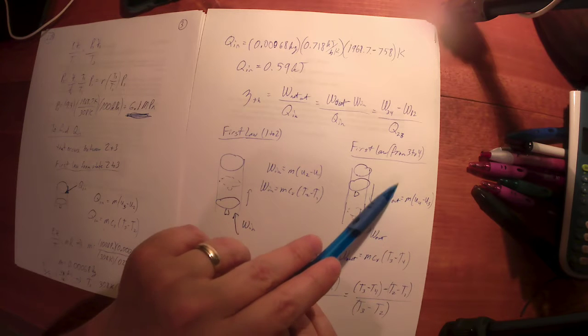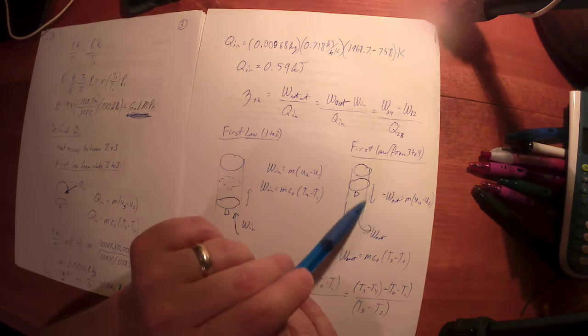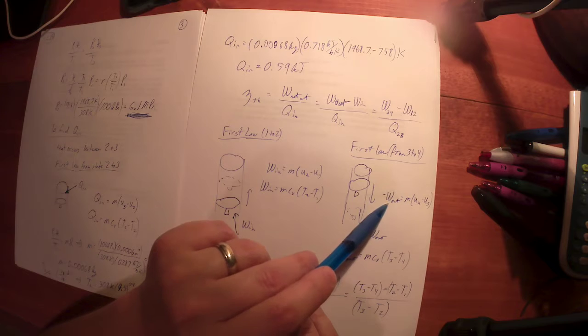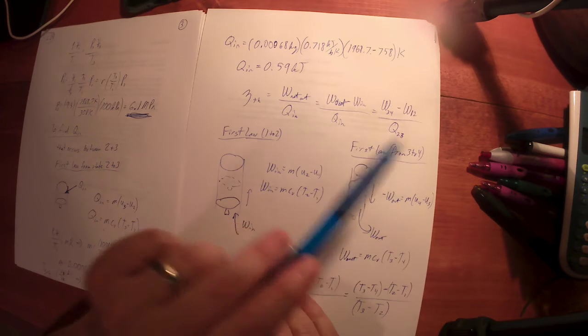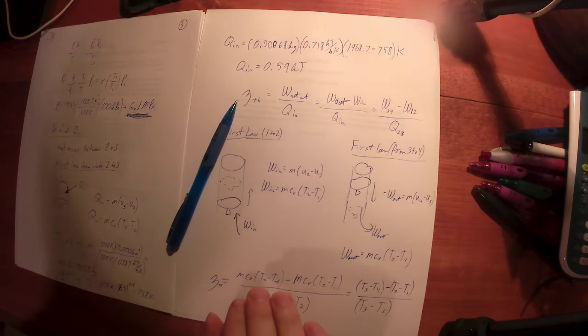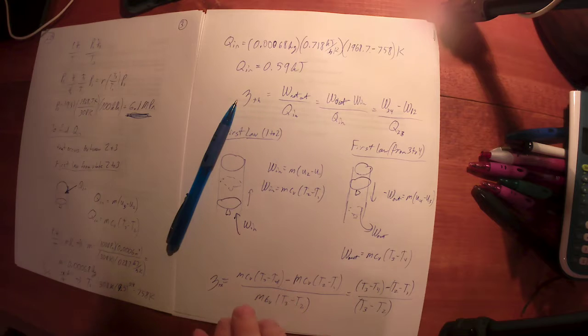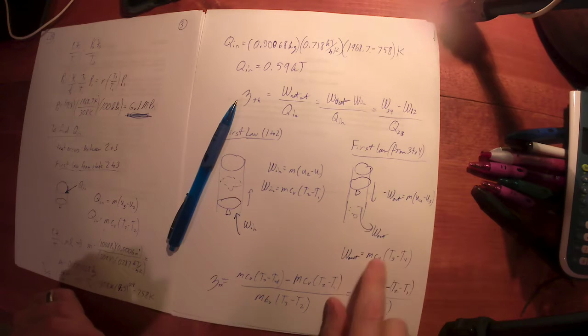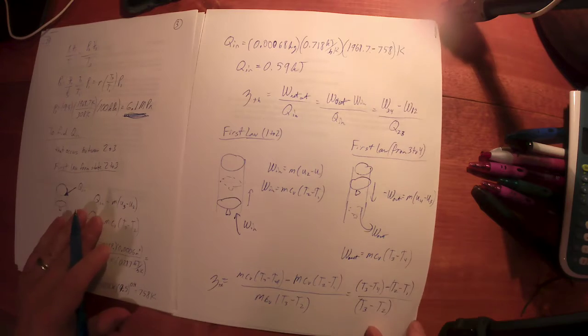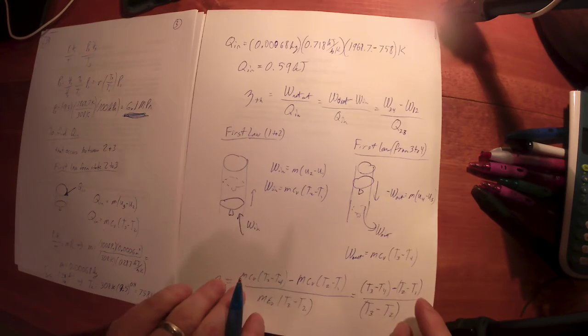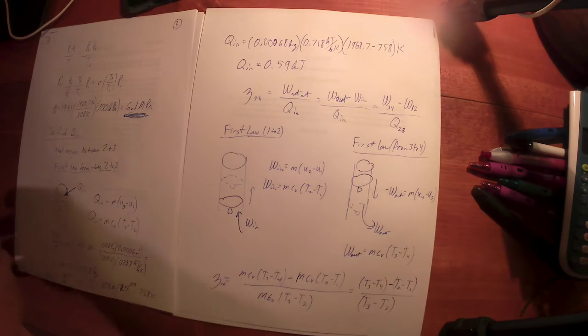And the same thing from state three to four. I've got expansion, so it's work out. Minus work out is again final minus initial, four minus three. You multiply your negative sign. Okay, so we saw that, let's not reiterate too much.